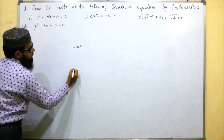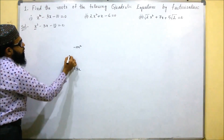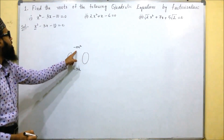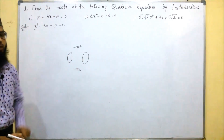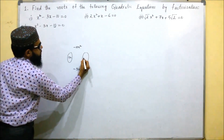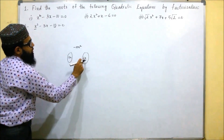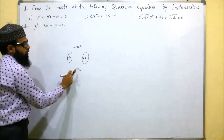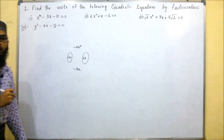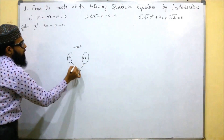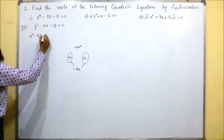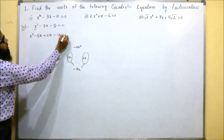The middle term is minus 3x. We have to find two terms such that when we multiply them we get minus 10x squared, and when we add or subtract them we get minus 3x. Those two numbers are minus 5x and 2x — 5 times 2 is 10, and 5 minus 2 gives 3. Since the sign is minus, we take the sign of 5 as minus. So we substitute these two values in place of minus 3x: x squared minus 5x plus 2x minus 10 equals 0.